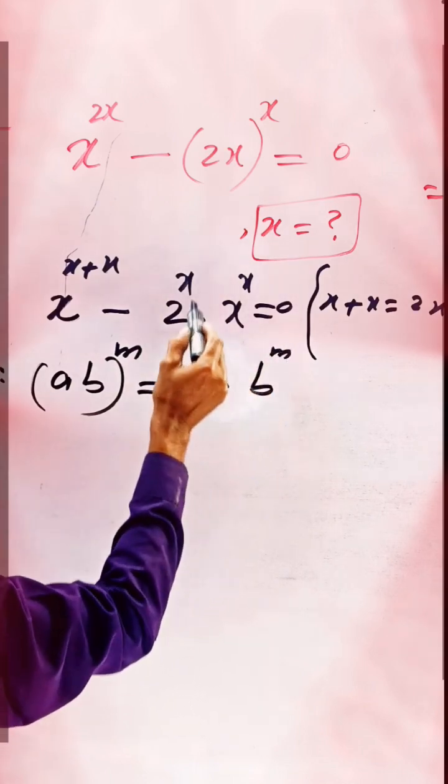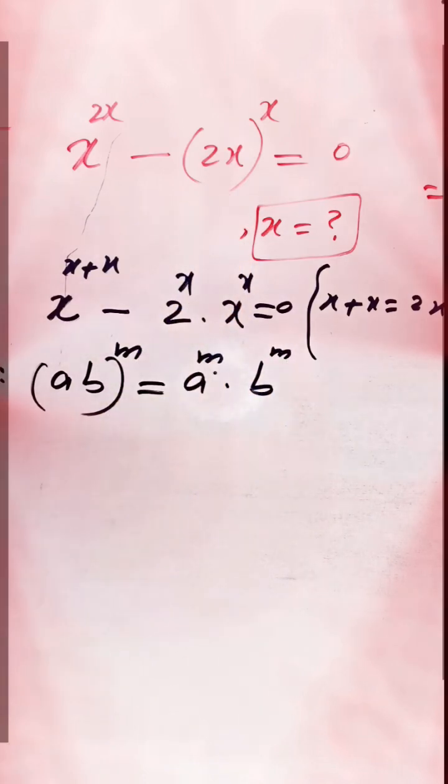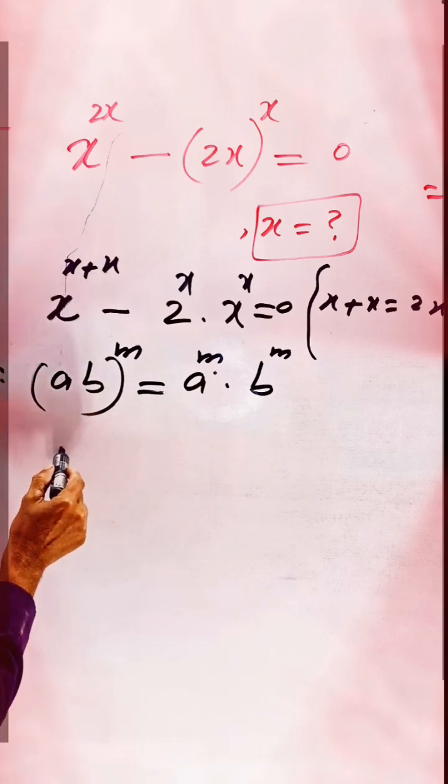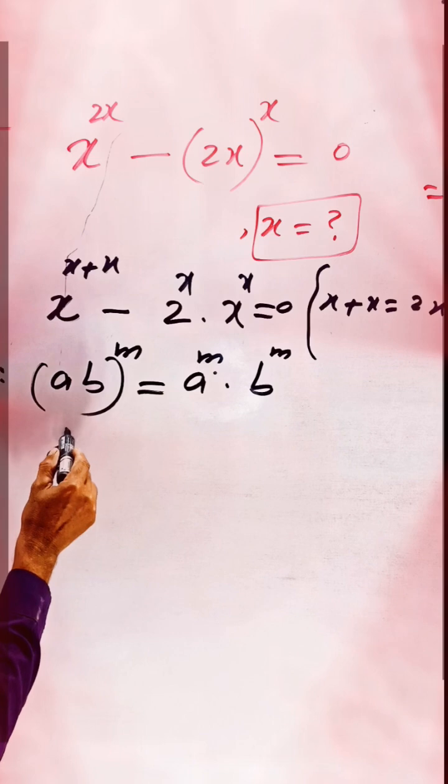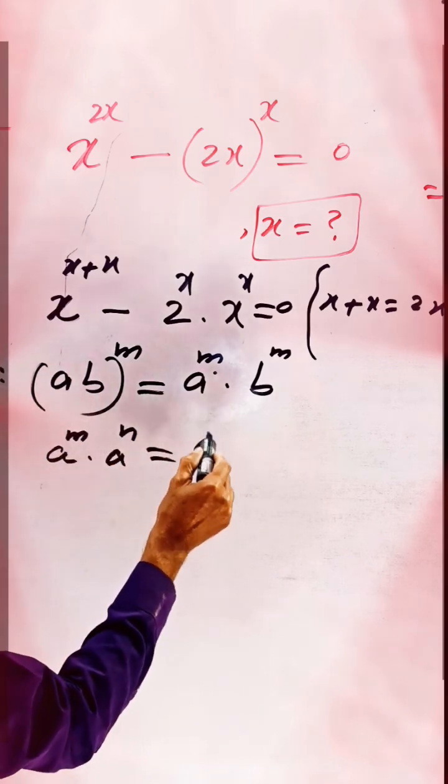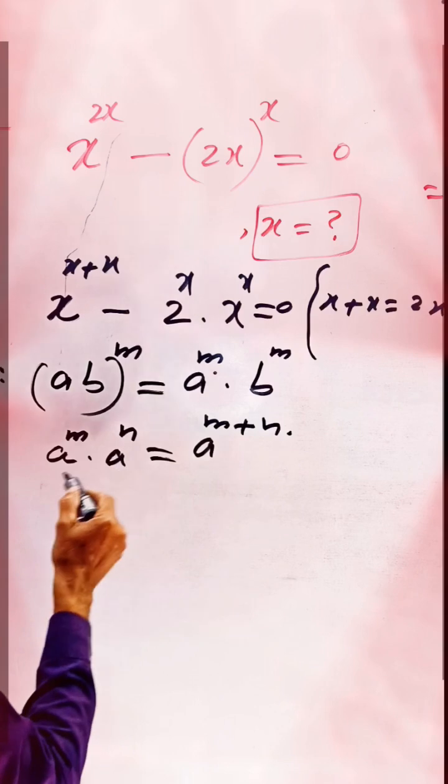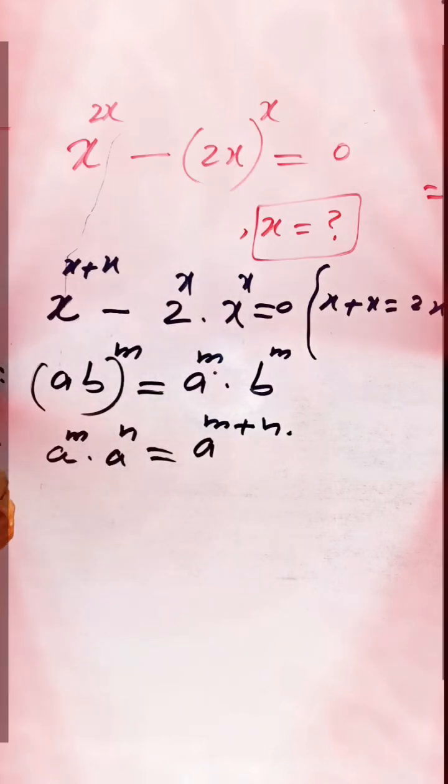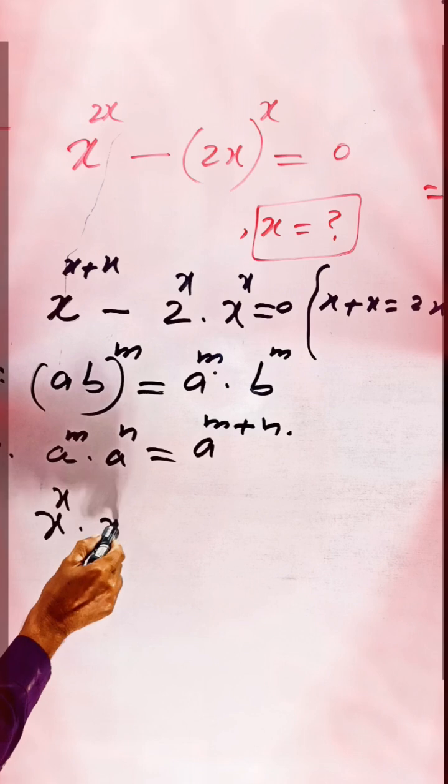According to this property, we open this term. And according to this rule, when the bases are same, we can write a to the power of m times a to the power of n. According to this rule, we are using it here: x to the power of x times x to the power of x.